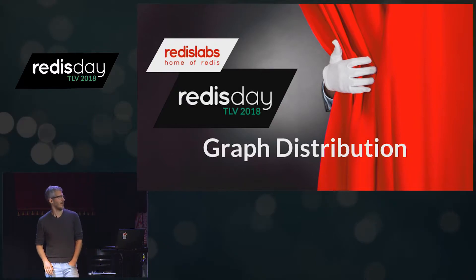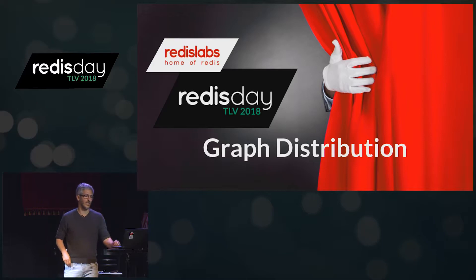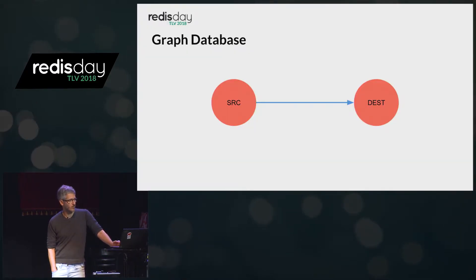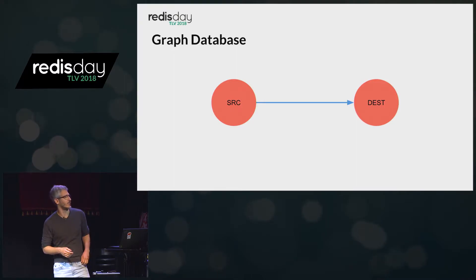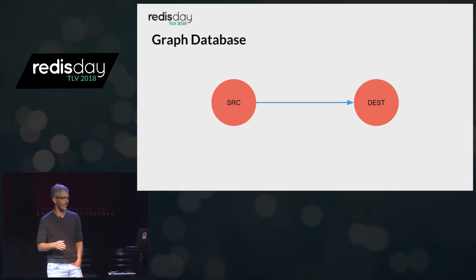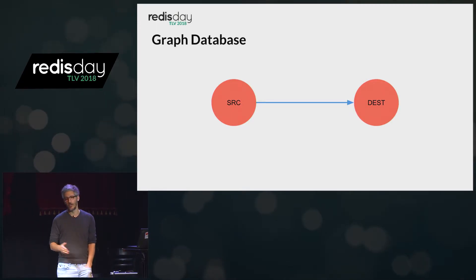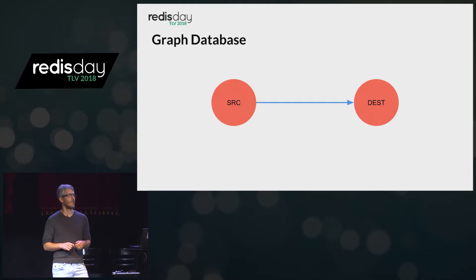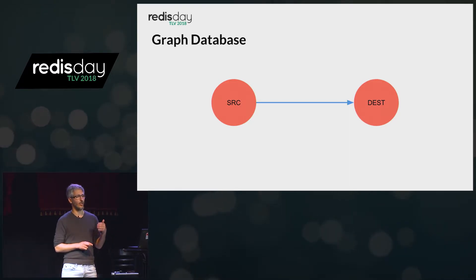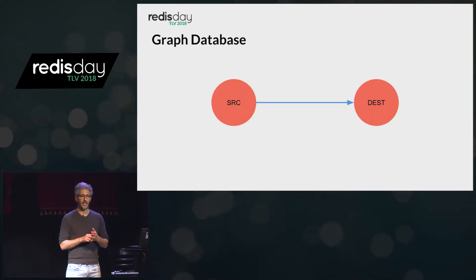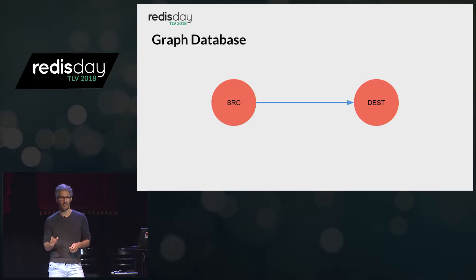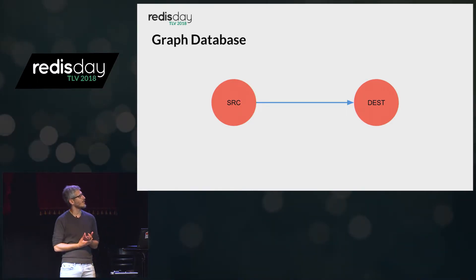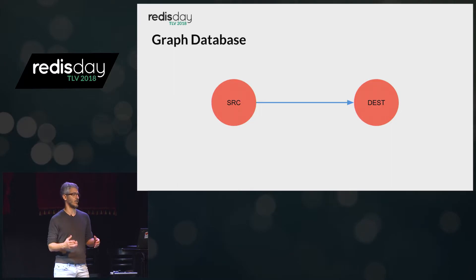Just to get everybody on the same page — what are graphs and what is a graph database? Graphs are basically a set of nodes, where a node can represent some entity. We can have nodes representing users and nodes representing countries. Once we have those nodes, we can start forming connections between them. Graph databases are specialized in storing, processing, and querying this type of connected data.